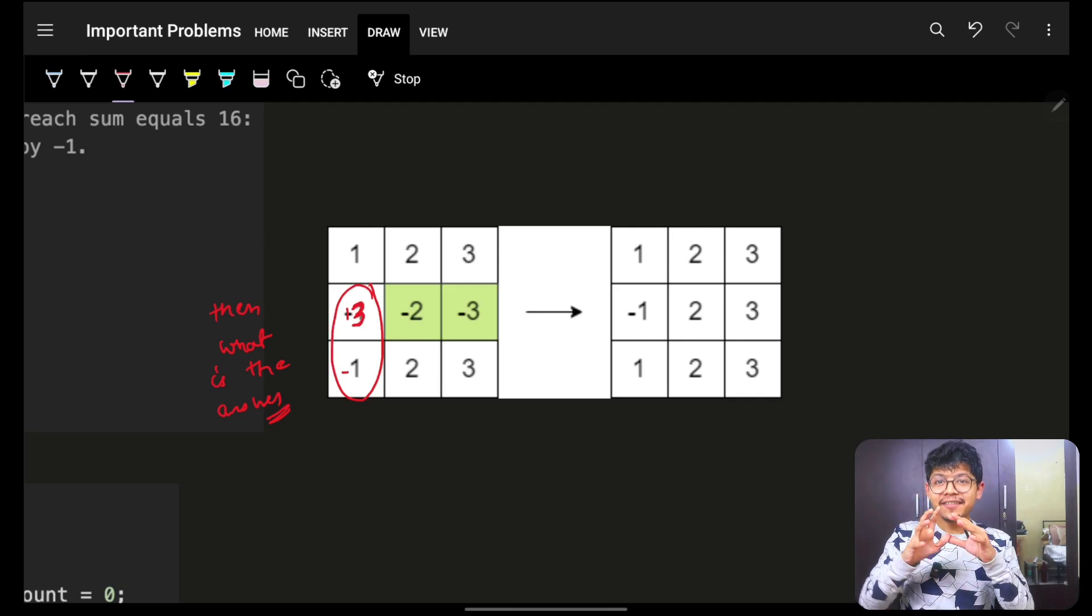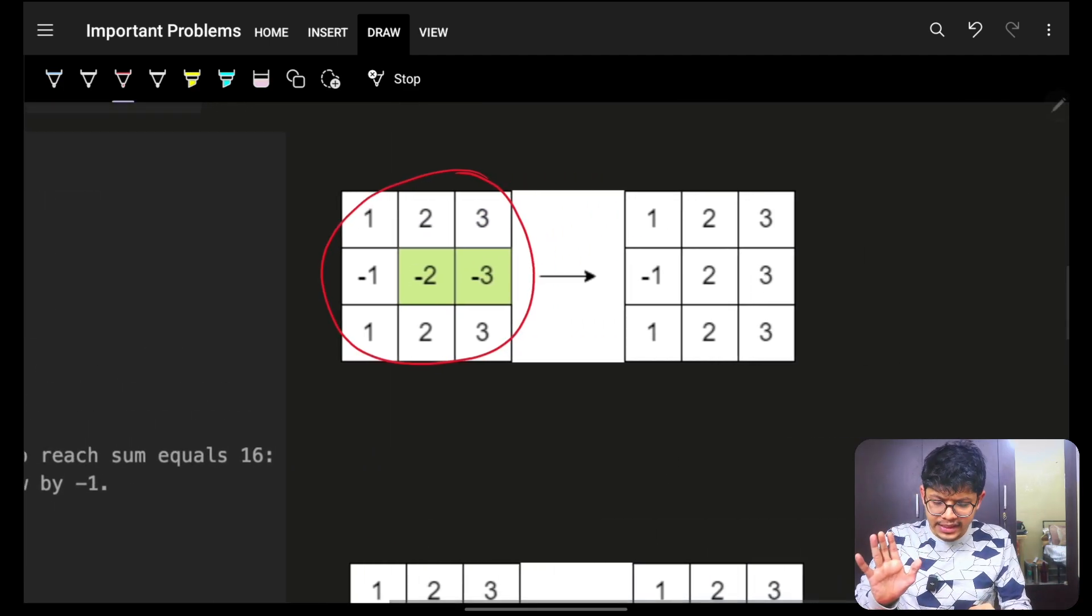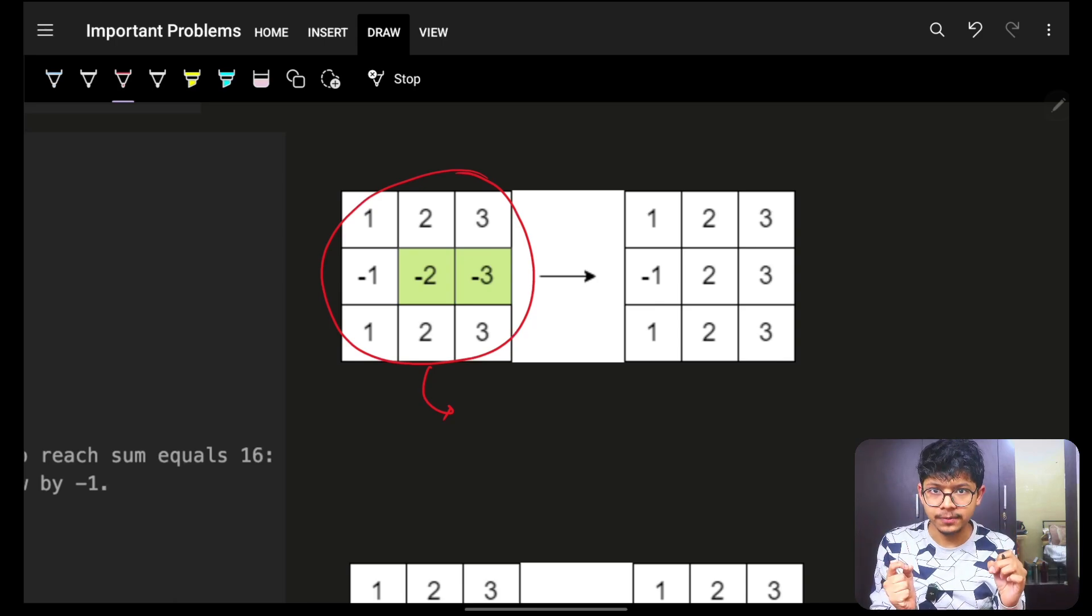Thus, if I reiterate the final approach, it will be nothing but taking the input matrix. Firstly, getting the max possible summation or max possible answer. What is that? It is nothing but summation of all of these values in their absolute sense. Which means, one, two, three, one, two, three, one, two, three is the actual maximum possible summation.